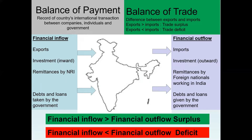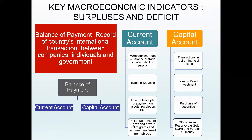A larger deficit is an indication of weak economic condition of a country. Balance of payment is composed of current account and capital account transactions. Examples of current account transactions are merchandise trade and services, income receipts or payments on assets, receipts on FDI, and unilateral transfers which include government and private relief grants and income transferred from abroad. Examples of capital account transactions are dealing in real or financial assets and direct investment, purchase of securities, and official asset reserves such as gold, SDRs and foreign currency.